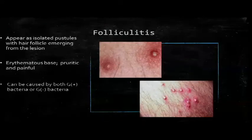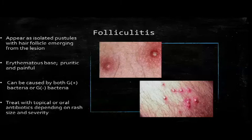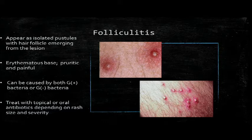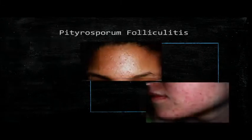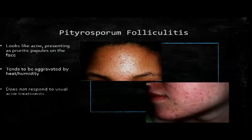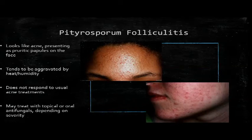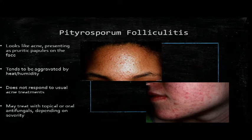Folliculitis can also look like acne. It's usually caused by gram-positive bacteria such as staph MSSA and MRSA, or gram-negatives like Pseudomonas and less commonly Klebsiella, Proteus, and Enterobacter. We treat this with topical or oral antibiotics depending on the severity. Pityrosporum folliculitis is a condition where yeast, which is part of normal skin flora, gets down into the hair follicles and multiplies, making it look like acne. A KOH prep will show budding yeast and hyphae, and patients will also report that it's not responding to acne medication.